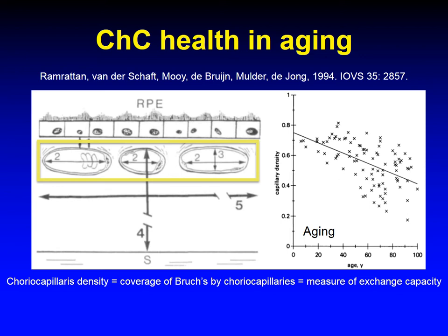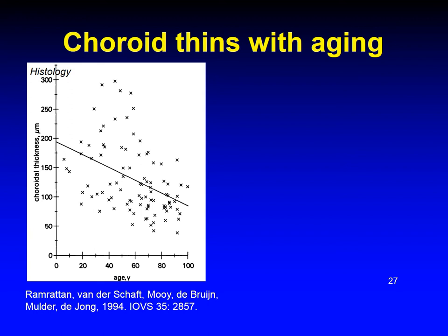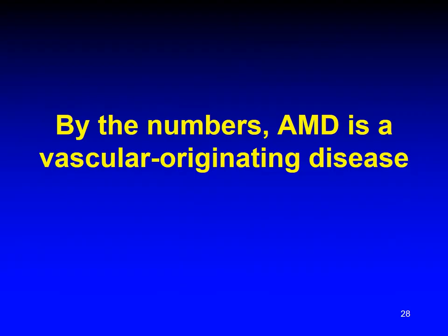We further showed that human RPE expressed both APOB and microsomal triglyceride transfer protein, which is required for lipoprotein assembly, meaning the RPE is a constitutive secretor of large lipoproteins like the liver and the intestine. In 1994, the group from Rotterdam published data from 95 donor eyes measuring choriocapillaris density — the percent coverage of Bruch's membrane by choriocapillaris — and found density declined with age. Rob Mullins's group found that membrane attack complex, the terminal effector of the complement pathway, focalizes to the choriocapillaris and Bruch's membrane starting in childhood and increasing throughout adulthood, suggesting a molecular mechanism for choriocapillary endothelial cell death linked to genetic susceptibility to AMD. The Rotterdam group also reported thinning of the choroid, now visible through enhanced depth imaging OCT.